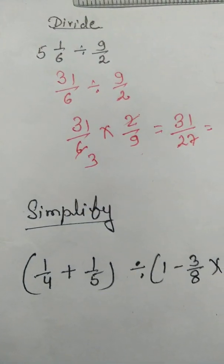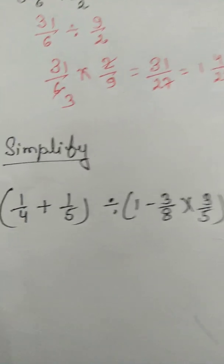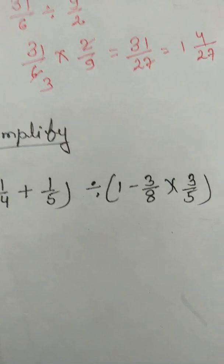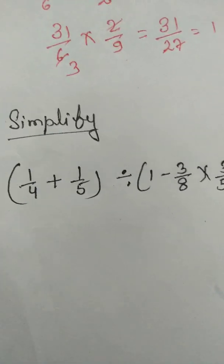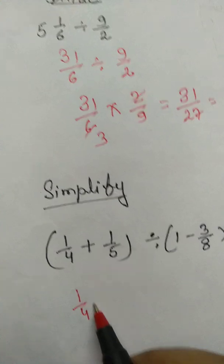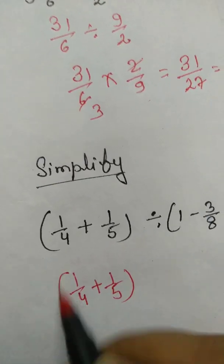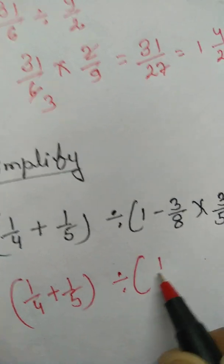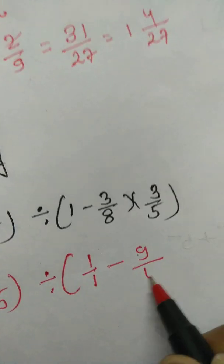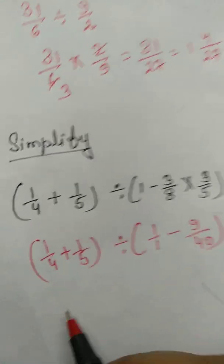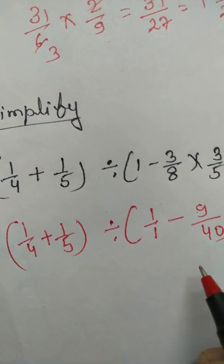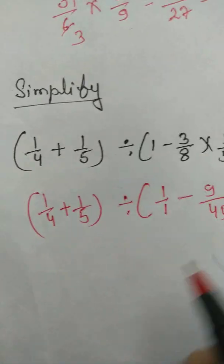After completing addition, subtraction, multiplication, and division, now we simplify — where all four operations are given together. In simplification, first solve the bracket. Here we have: one upon four plus one upon five, divide one upon something, and other terms. Left side has plus and right side has minus, with different denominators.